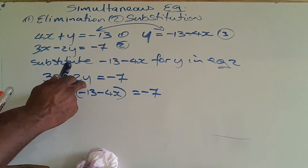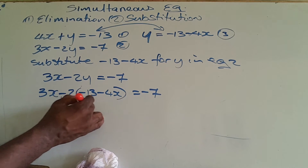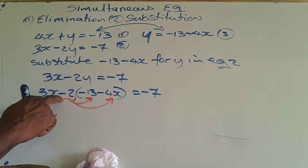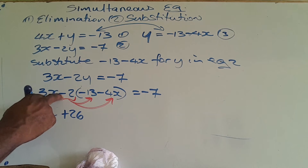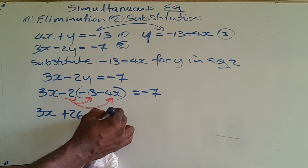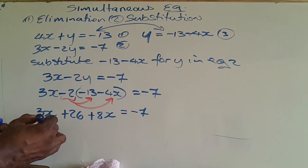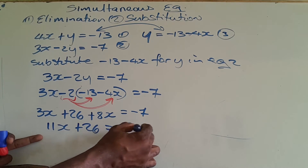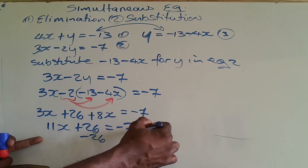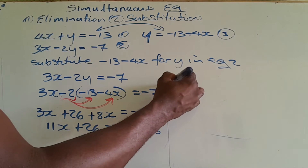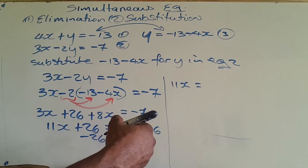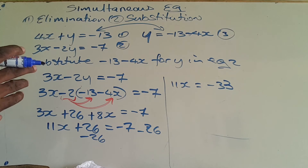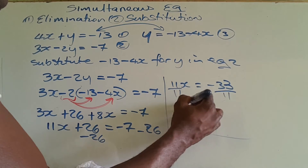Now I'm going to distribute the negative 2 throughout the bracket. Negative 2 times negative 13 is positive 26, and negative 2 times negative 4x is positive 8x. So I have 3x plus 26 plus 8x equals negative 7. Collecting like terms: 3x plus 8x is 11x, so 11x plus 26 equals negative 7. Subtracting 26 from both sides gives 11x equals negative 33. Dividing by 11, x is equal to negative 3.